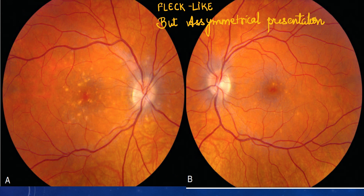PIC lesions can look similar to fleck-like dystrophies such as Stargardt disease and fundus flavimaculatus. However, the key difference is the asymmetrical presentation. In most dystrophies, there is symmetrical presentation in both fundi, whereas in PIC, lesions are more prominent in one eye than the other, though both eyes are involved. Whenever you see a fleck-like condition affecting both eyes asymmetrically, you should think about punctate inner choroidopathy.